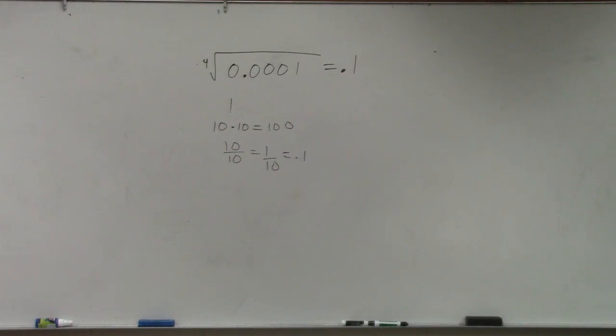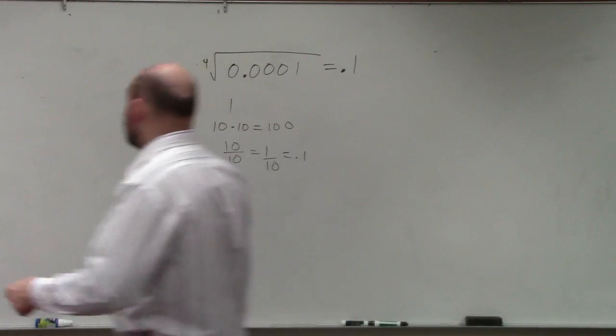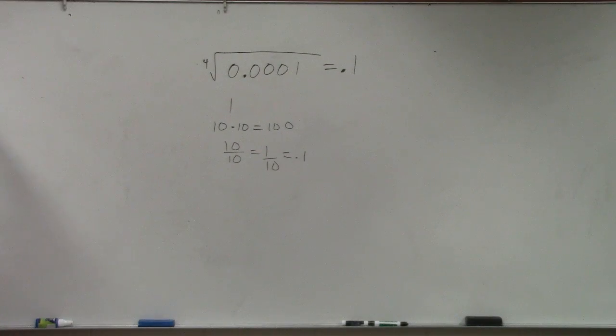What does the fourth root say? Multiply a number by itself four times. So you could say, well, 1 times 1 times 1 times 1, I know it doesn't give me that answer. So let me move to the next one.